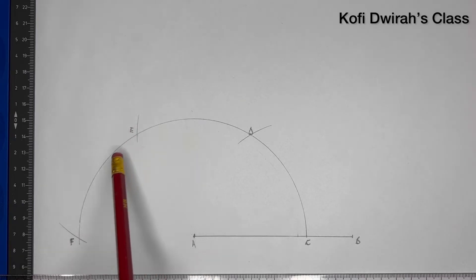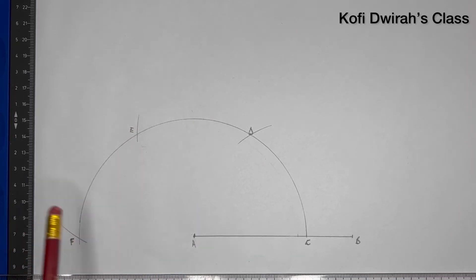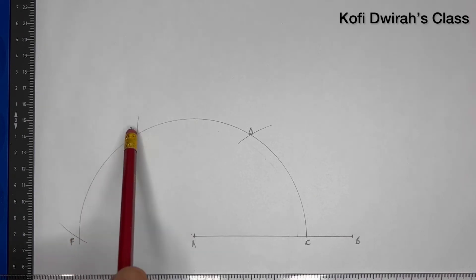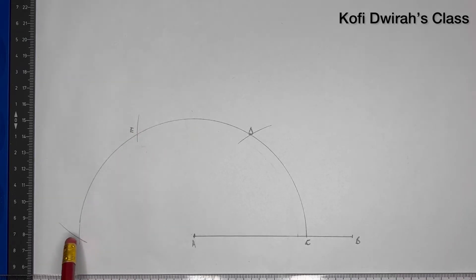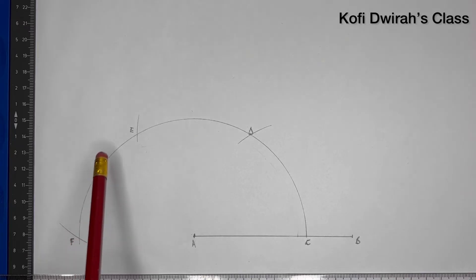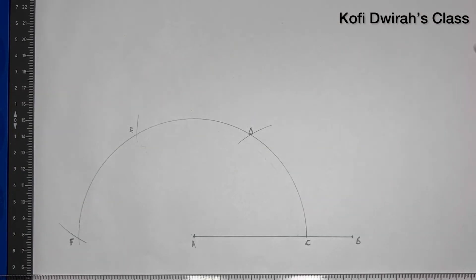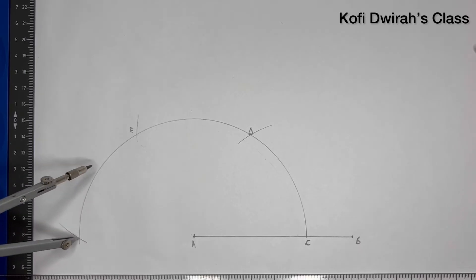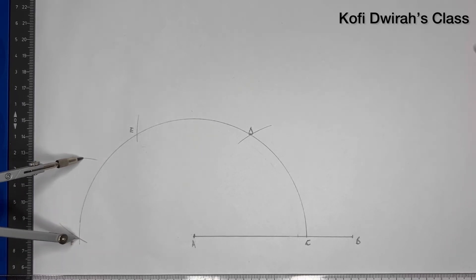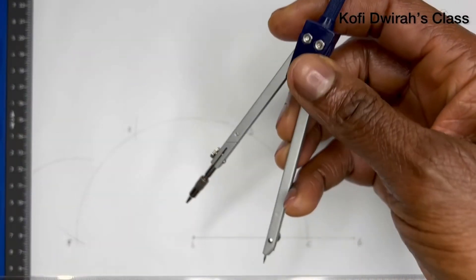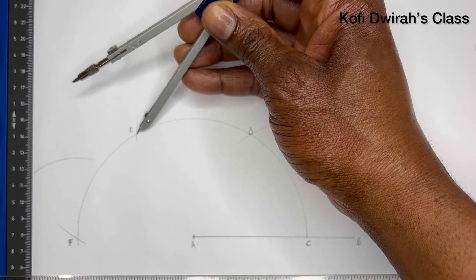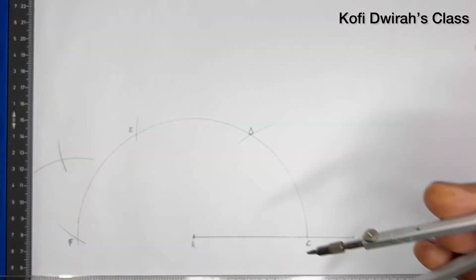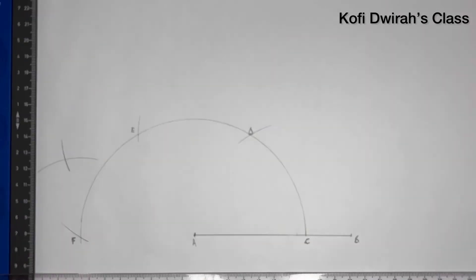We know a straight line is always 180 degrees. So we are going to bisect the distance from E to F. With your compass at point F, open your compass to more than one half, then draw an arc. Then at point E, draw another arc to get point G.